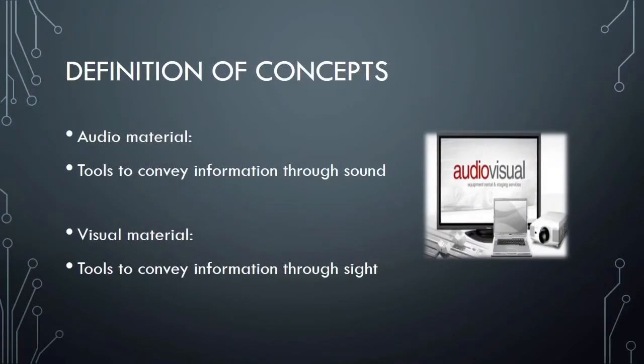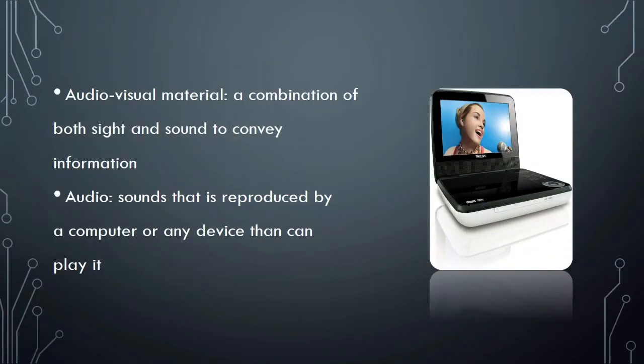Definitions: Audio materials are tools to convey information through sound — these are materials that can only be delivered through an audio device. Visual materials are tools to convey information through sight; they can be a stationary picture, text, or a video. Audio visual material is a combination of both sight and sound to convey information, making it the best source of displaying information.